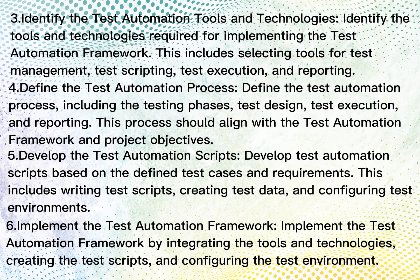Step 4: Define the test automation process. This process includes the testing phases, test design, test execution, and reporting. This process should align with the test automation framework and project objectives.